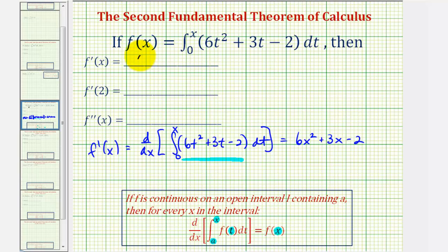So f prime of x is equal to 6x squared plus 3x minus 2, and therefore f prime of 2, we'll substitute 2 for x. That'll be 6 times 2 squared plus 3 times 2 minus 2. We'd have 4 times 6, that's 24, plus 6, that's 30 minus 2, equals 28.